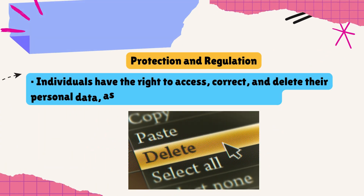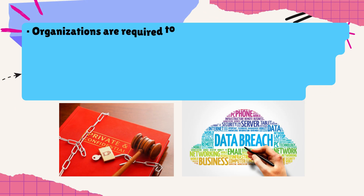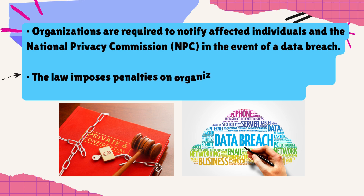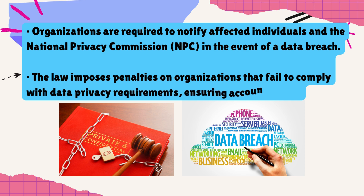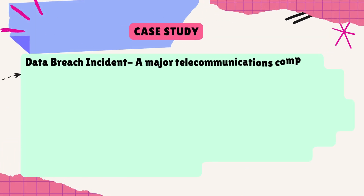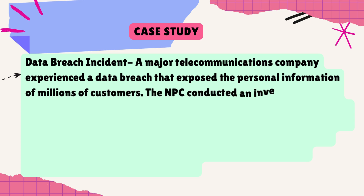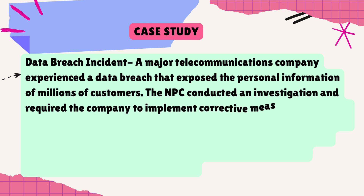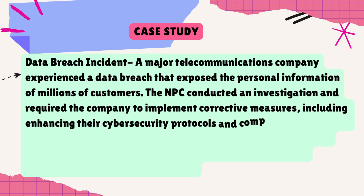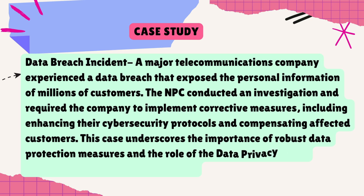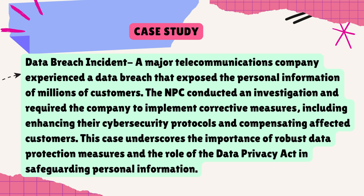Protection and Regulation: Individuals have the right to access, correct, and delete their personal data, as well as to object to its processing. Organizations are required to notify affected individuals and the National Privacy Commission, or NPC, in the event of a data breach. The law imposes penalties on organizations that fail to comply with data privacy requirements. Case Study — Data Breach Incident: A major telecommunications company experienced a data breach exposing the personal information of millions of customers. The NPC conducted an investigation and required the company to implement corrective measures, including enhancing cybersecurity protocols and compensating affected customers, underscoring the importance of robust data protection.